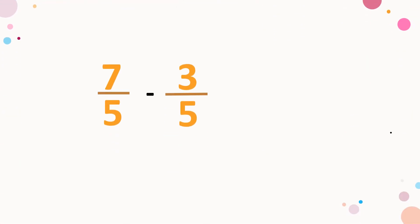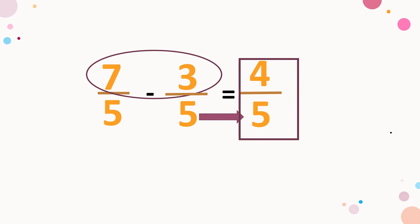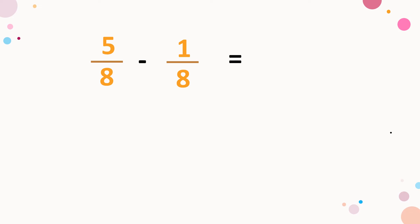Let's have more examples. Seven over five minus three over five. Seven minus three, that is equal to four. Copy the common denominator, five. So four-fifth is the final answer. Now, if you want to try this, you can pause the video and unpause if you are ready. So five over eight minus one over eight. Five minus one, that is four over eight.